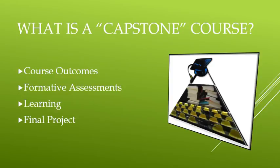We'll start with course outcomes. If you look at the course outcomes in the syllabus, you'll notice that they are identical to the BA psychology program outcomes. Different from a traditional course, these program outcomes are clear, concise, measurable statements of knowledge, skills, and abilities.